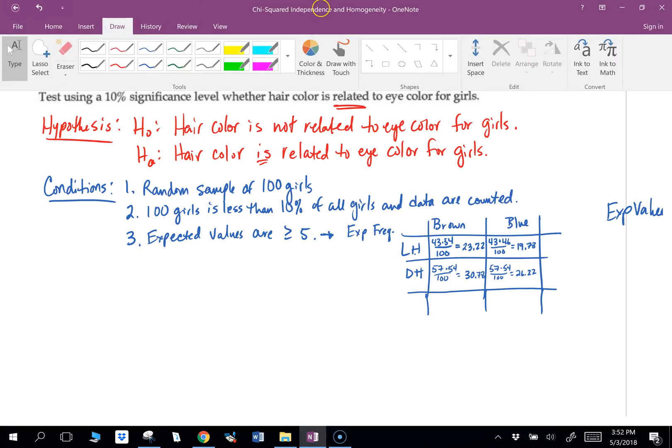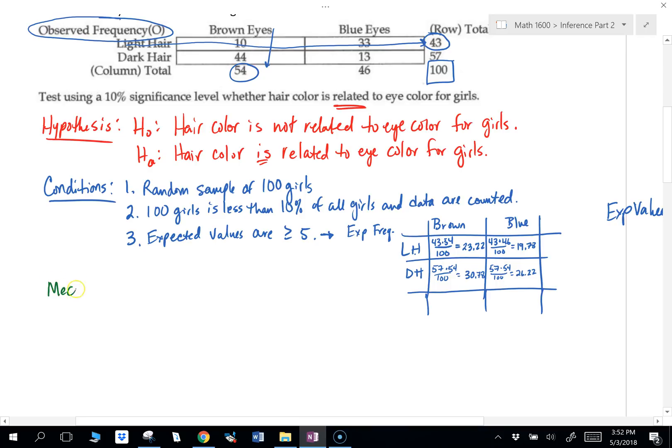Okay. So now that we've got our expected values, we're going to go ahead and do our next part, which is our mechanics. The first thing we need is our degrees of freedom. Now the degrees of freedom for a chi-squared two-way table, remember the degrees of freedom for goodness of fit was categories minus one. This one's going to be columns minus one times rows minus one. So how many columns do we have? Two. And rows? Two. So we've got two minus one times two minus one, which is one degree of freedom.